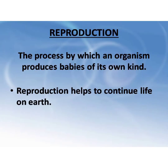We have learned in this chapter what is reproduction and why is it important. The process by which an organism produces babies of its own kind is called reproduction. And reproduction helps to continue life on earth.